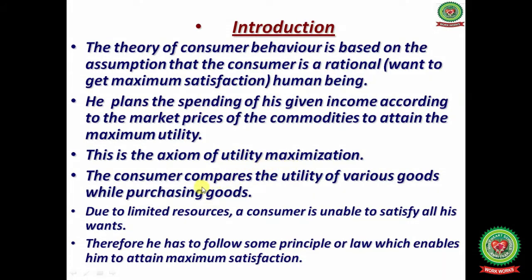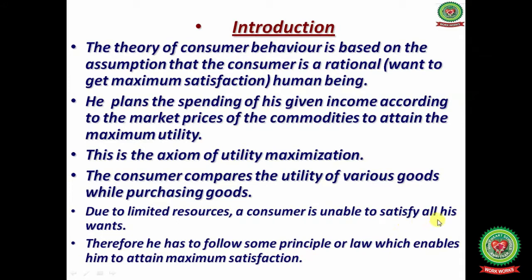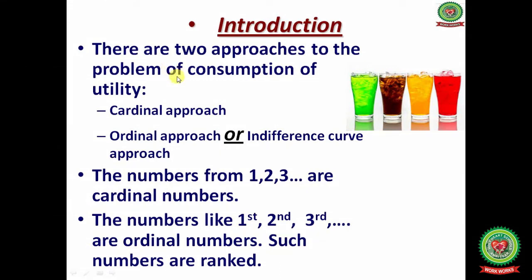Total utility: suppose you are thirsty and you take 3 glasses of water to satisfy your thirst, so your total utility is 3 — the number of glasses you drink is your total utility. Total utility is obtained by adding utility derived from the consumption of all units of a commodity.